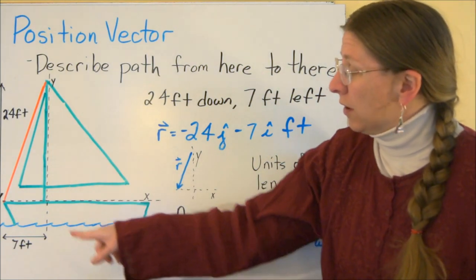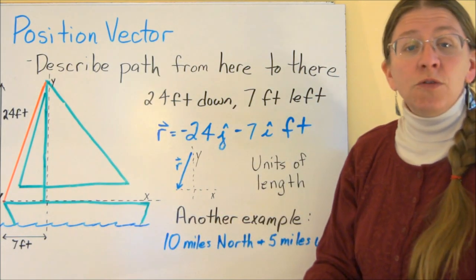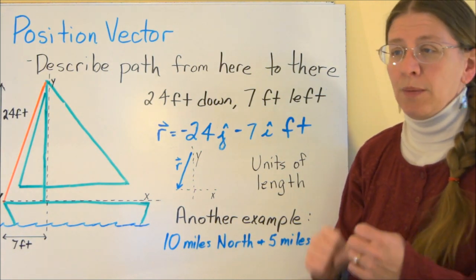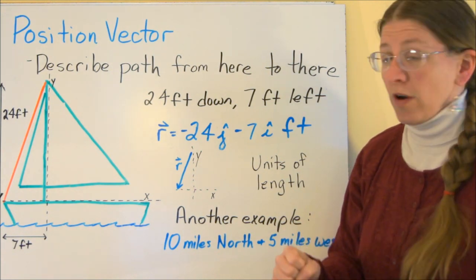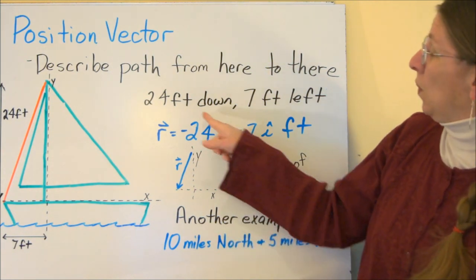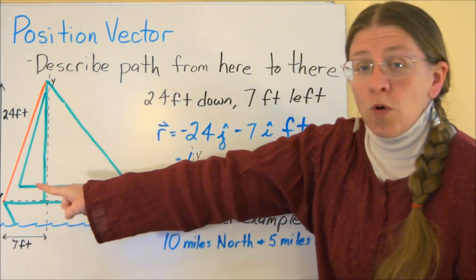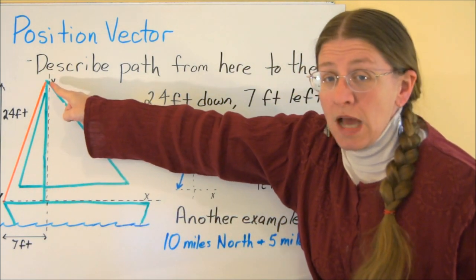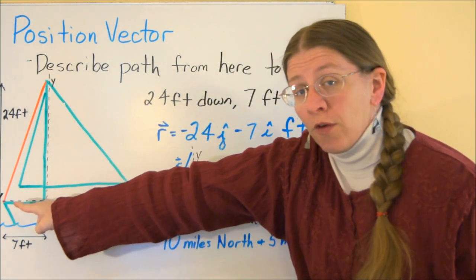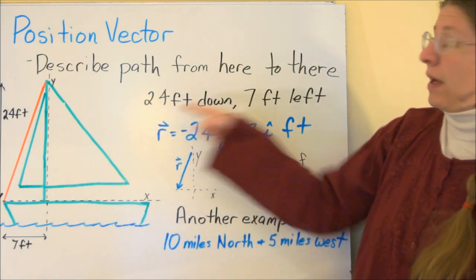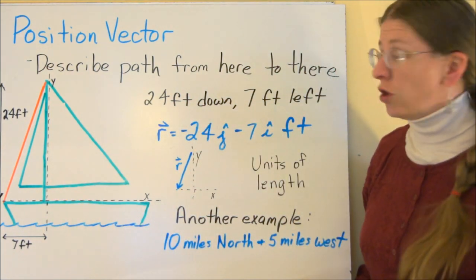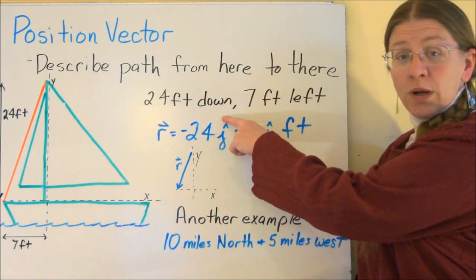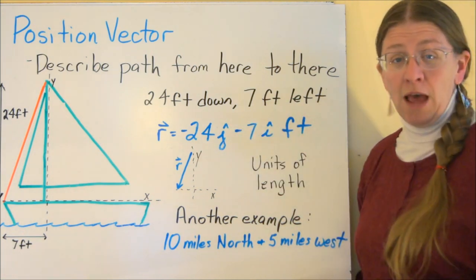So if we look at my boat here, that red line is the forestay. The forestay is a big cable that ties the mast onto the front of the boat. So if you look at this particular forestay, it's going from the top of the mast to the front of the boat. So it's going, if you just think about this in regular English terms, the forestay goes 24 feet down and 7 feet left.